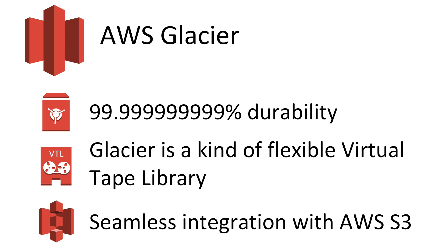Amazon Glacier is an extremely low-cost storage service that provides secure and durable storage for data archiving and backup. It's possible to set up Amazon S3 for the automatic and continuous backup of bucket files.